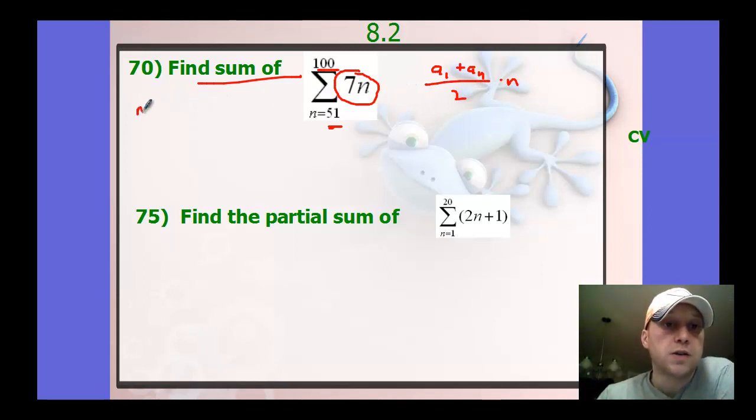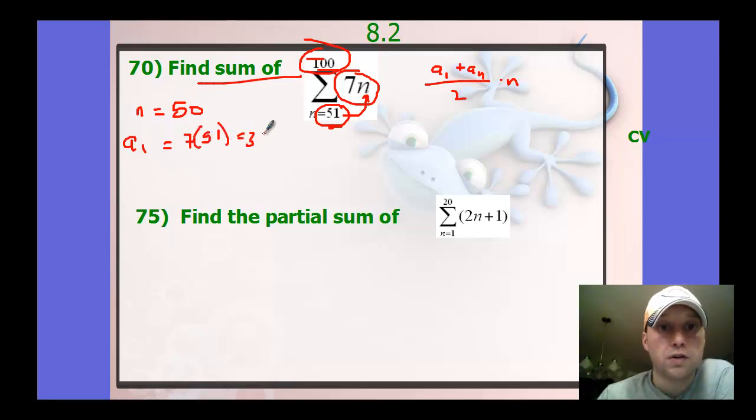The first thing you have to realize is how many terms we're dealing with here. So what is n in this problem? So we're going from 51 to 100. How many numbers is that? That is 50 numbers. So n is still 50 in this. What is the first term in this? Well, that's plugging 51 in for n. So 7 times 51, and you get 357.